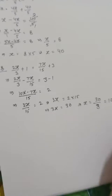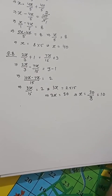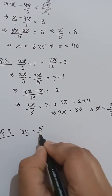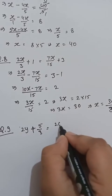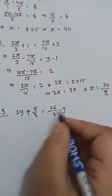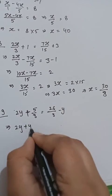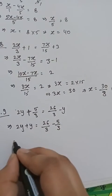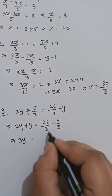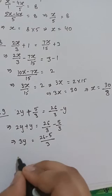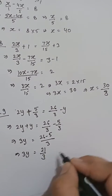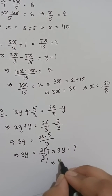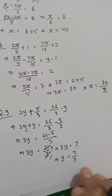Question number 9: 2y plus 5/3 equals 26/3 minus y. Taking y terms together: 2y plus y = 3y. Constants: 26/3 minus 5/3 = 21/3 = 7. So 3y = 7, and y = 7/3.